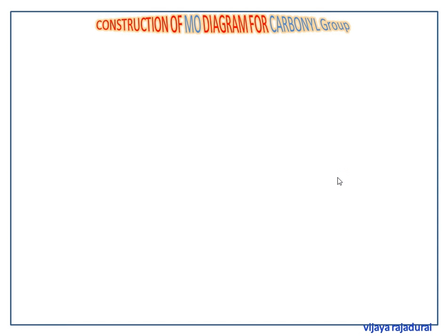Now we construct the molecular orbital diagram for the carbonyl group. We describe the carbonyl group in terms of an interaction between an sp2 hybridized carbon atom and an sp2 hybridized oxygen. We will place the molecule in the xy plane and orient the CO bond along the x-axis.